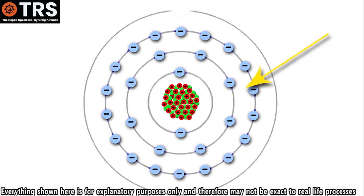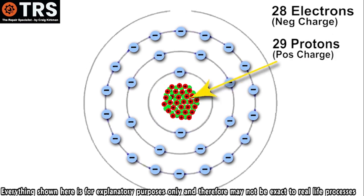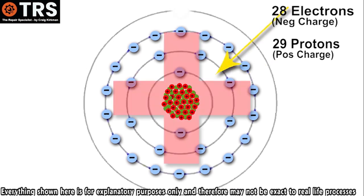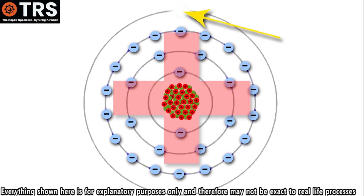But now this particular atom has lost one of its negatively charged electrons. That means that it only has 28 negatively charged electrons, but it still has 29 positively charged protons. That means that the overall positive charge for this particular atom outweighs the negative charge. But because it has lost an electron, whilst that electron is not present, it's no longer called an atom. It's called an ion.